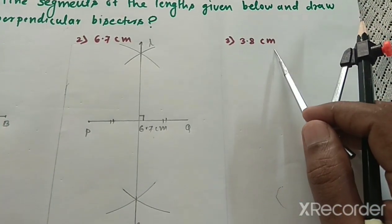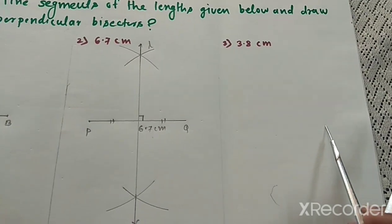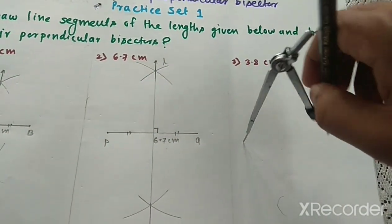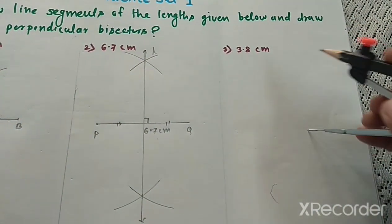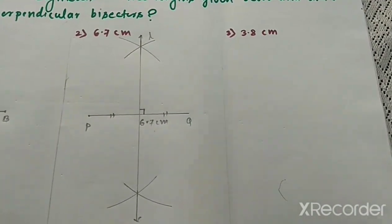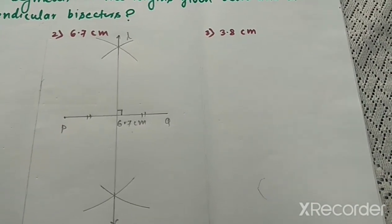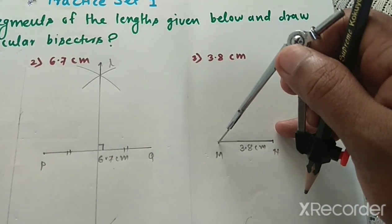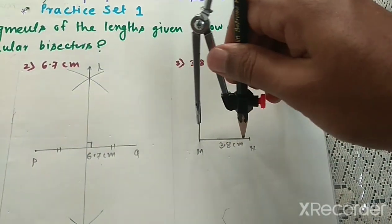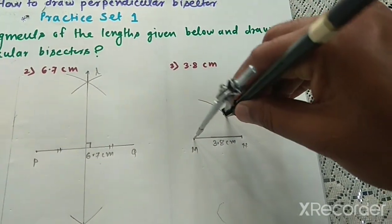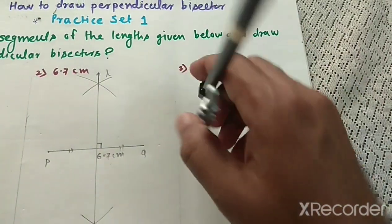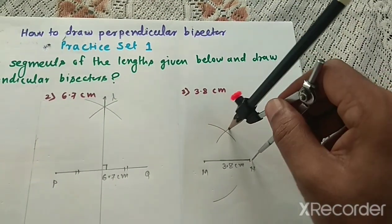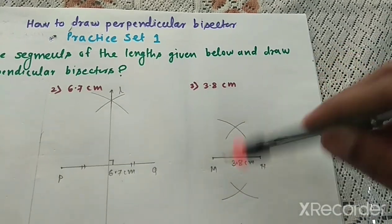Next, segment with distance 3.8. So first draw segment with distance 3.8 cm. Using compass, put compass first point, upper arc, lower arc. Then side, upper arc, lower arc, join. You can easily draw the perpendicular bisector. See, this is our segment MN. Keeping the still point on point M, take distance more than half, make upper arc, lower arc. Now, keeping still point on N, cut the upper arc and lower arc. Join this.